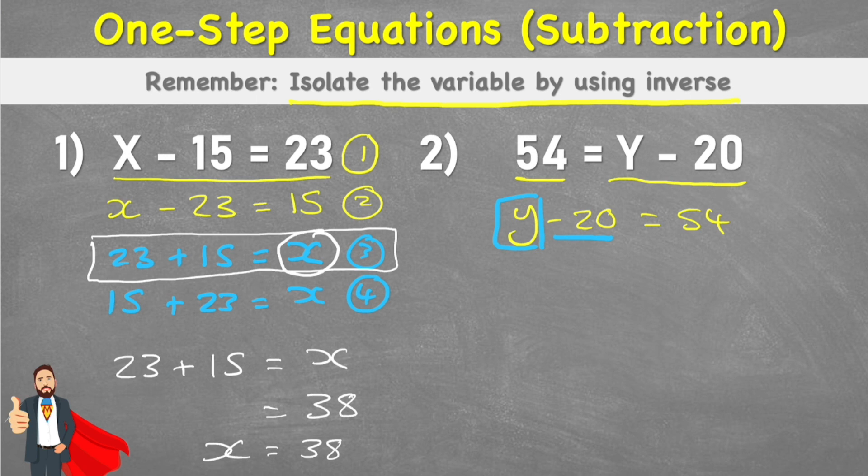We have y and it's connected to this negative 20. So if we think about what we know about equations, we know that whatever's on either side of the equal sign has to remain the same for our equation to be balanced and equivalent. So if we want to try and get rid of this negative 20, what I could do is I could add a positive 20 to this side of the equation. But therefore, I would have to add a positive 20 to this side of the equation too.